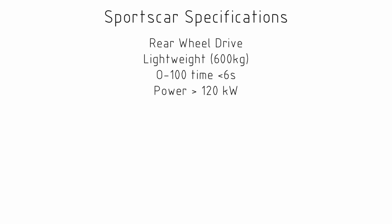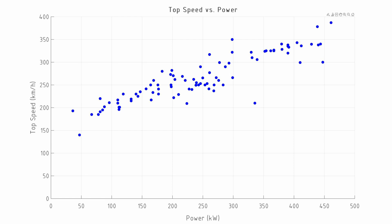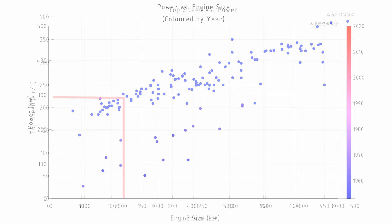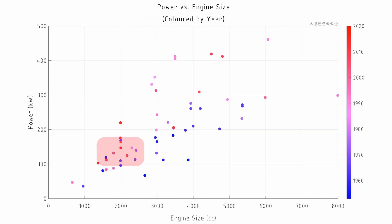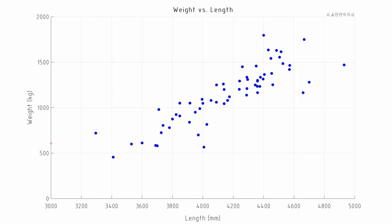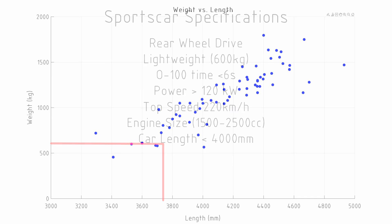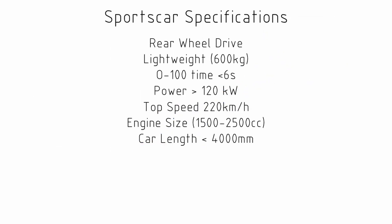If we have a look at top speed versus power, 120 kilowatts is going to get us around 220 kilometers an hour, which is far more than needed from this vehicle. The engine should be between one and a half and two and a half litres, and we would expect the car to have a length less than four meters. At this point we can go back to our data set and look at the cars that already achieve under a six-second zero to 100 time, are less than four meters in length, and preferably have an engine of less than two and a half litres.